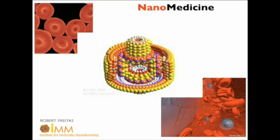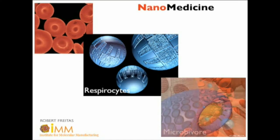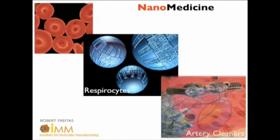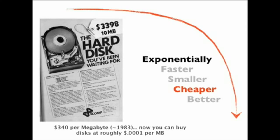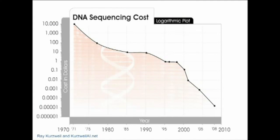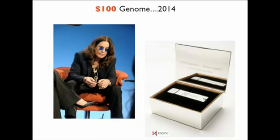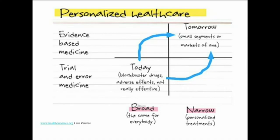Going further down the small pathway, we're entering the era of nanomedicine — the ability to make devices super small to the point where we can design red blood cells or micro-robots that will monitor our blood system, immune system, or even clear out clots from our arteries. How about exponentially cheaper? Hard disks used to be $3,400 for about 10 megabytes. In genomics, the genome cost about a billion dollars 10 years ago. We're now approaching a thousand-dollar genome probably next year, and in two years about a hundred-dollar genome. What are we going to do with hundred-dollar genomes?